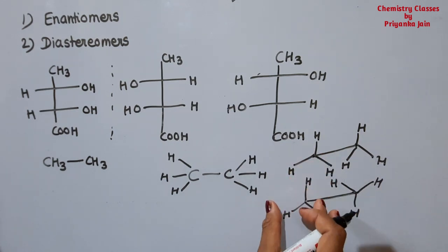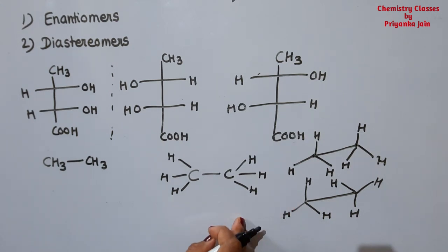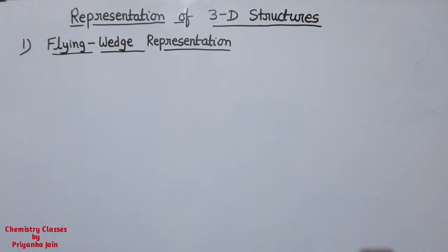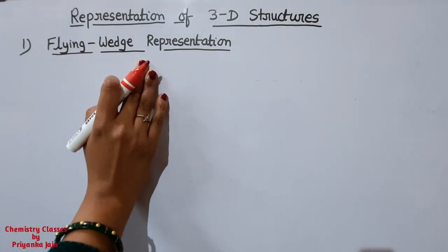We will give a full video about conformational isomers later. First we need to see enantiomers and diastereomers. The next important thing is the representation of three-dimensional structures, because we need to identify whether given structures are identical molecules, enantiomers, or diastereomers. We should know the different types of representations and how to interconvert them.